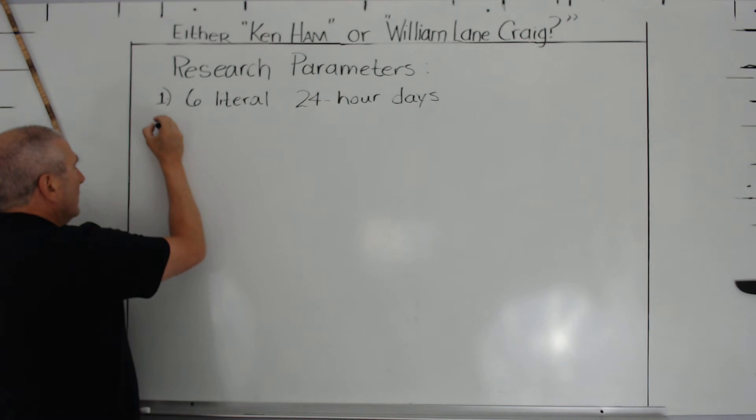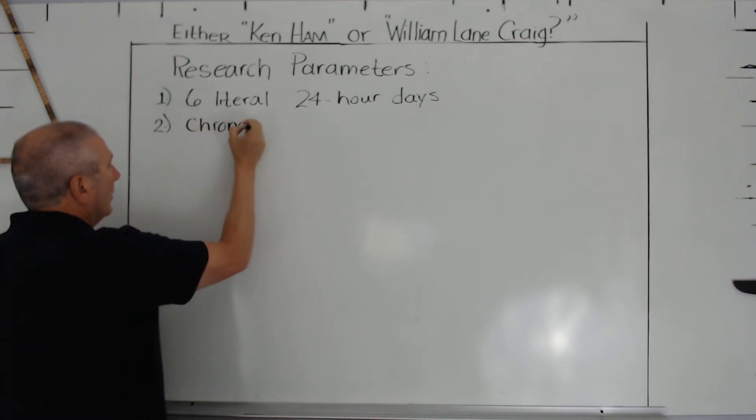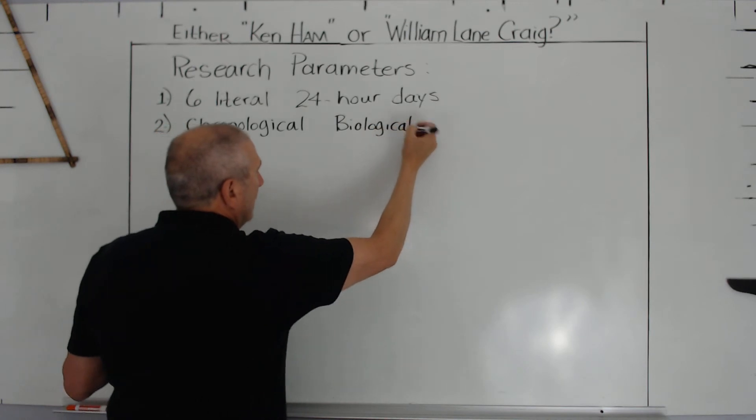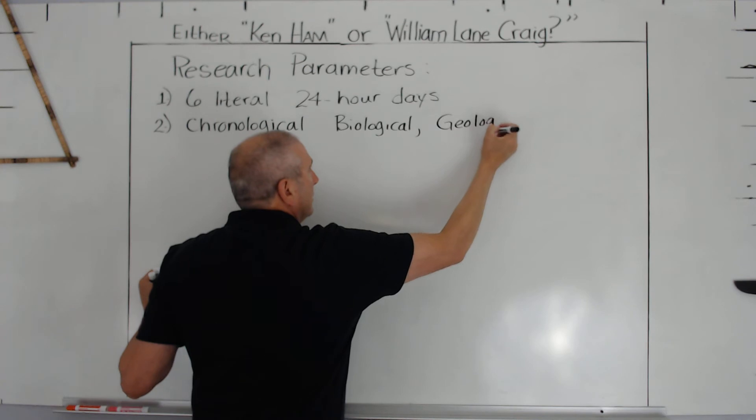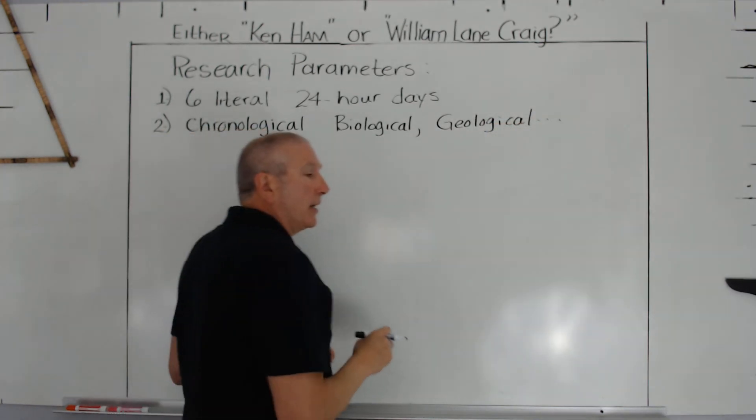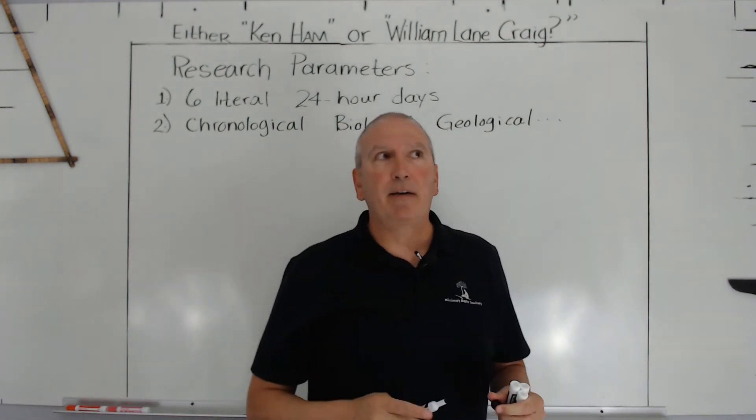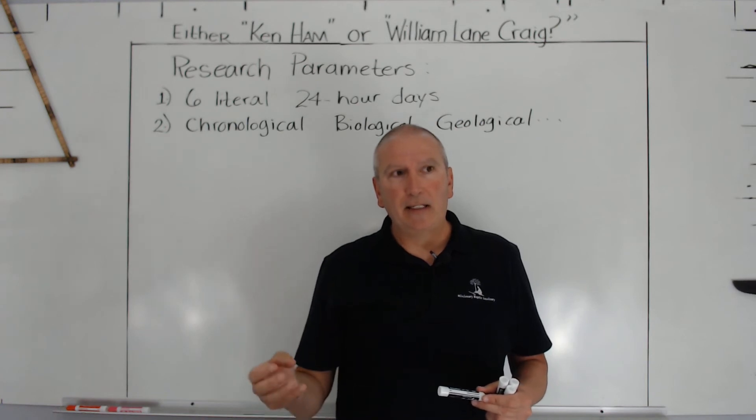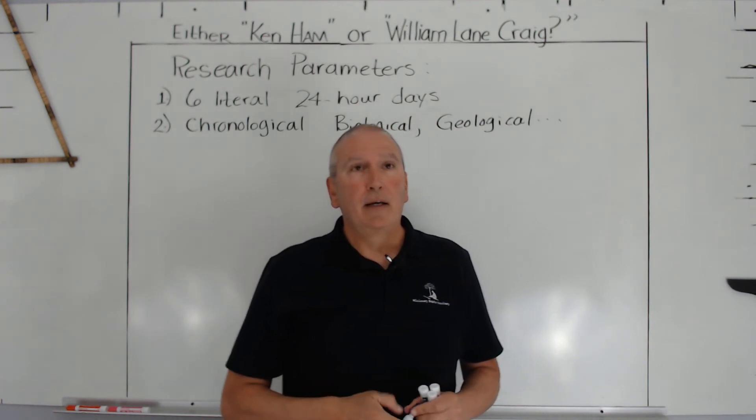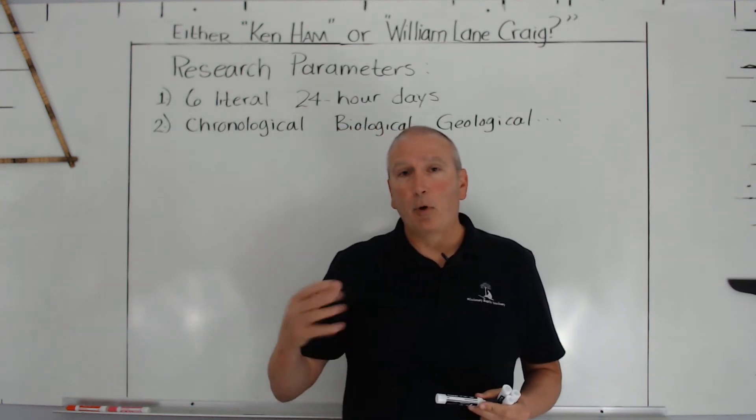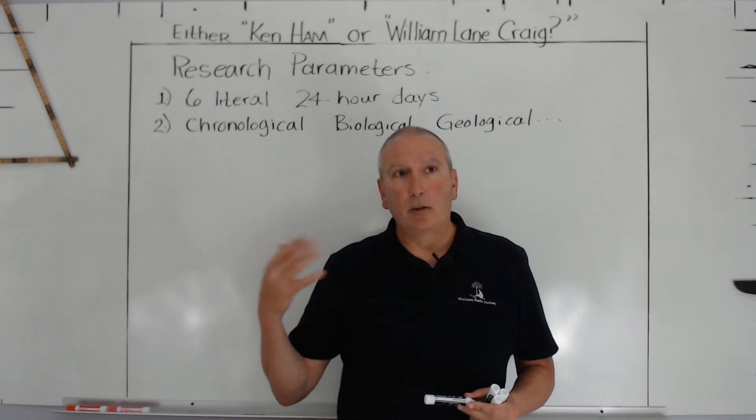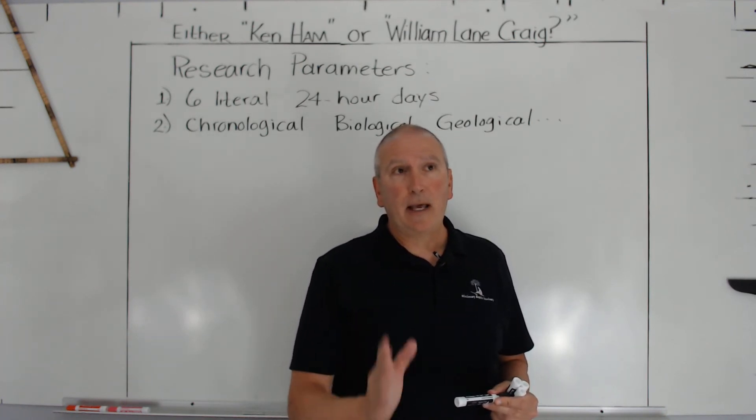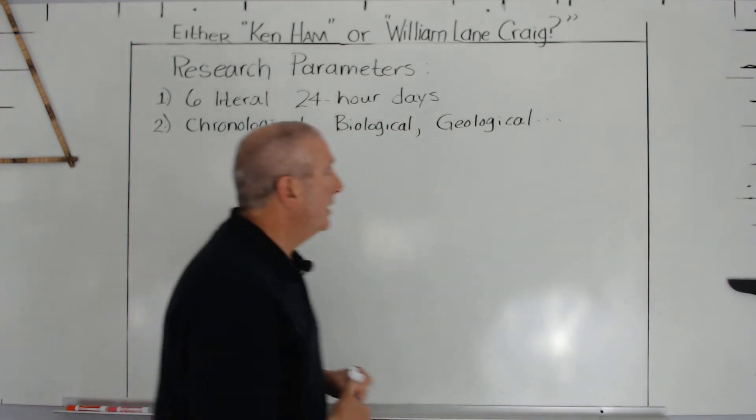So his background in hermeneutics, the science of interpretation - this is just a research parameter. So six literal days, number two, we have chronological, and we also have biological, and we have geological. We won't need botanical, but that's in the Bible. We have a decay rate of a fig tree that was immediate and would have taken days perhaps weeks to decay to that point instantly. We also have water transformed into wine in an immediate process that would have taken quite some time - to move water to wine, then into grape juice, then into wine. We'll just stay with those two. These are all research parameters.